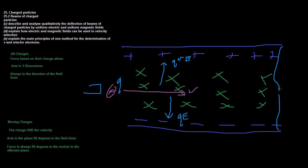The particle can only pass through the slit if these two forces are equal: qvB equals qE. Cancel q from both sides and you get v equals E over B. Only particles whose velocity equals the ratio of the electric field to the magnetic field can get through. This works precisely because the magnetic force depends on velocity while the electric force does not.